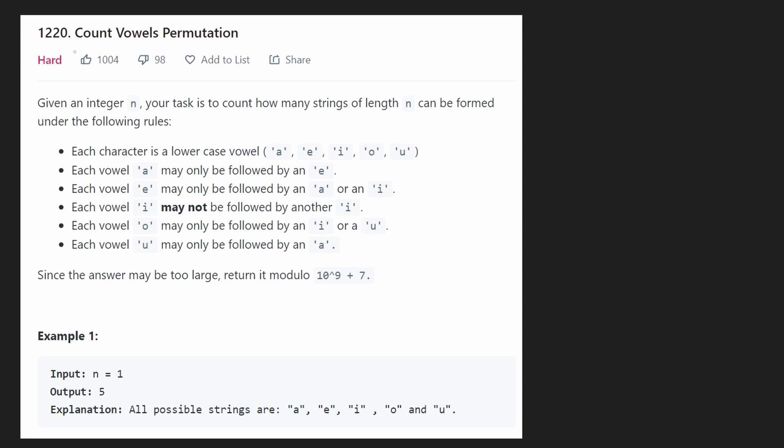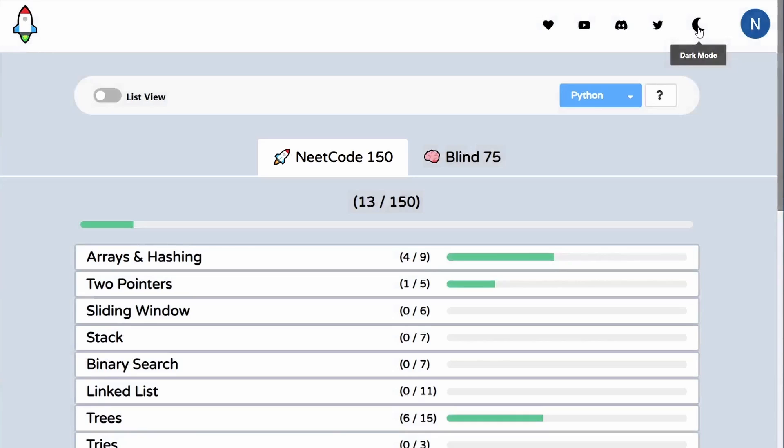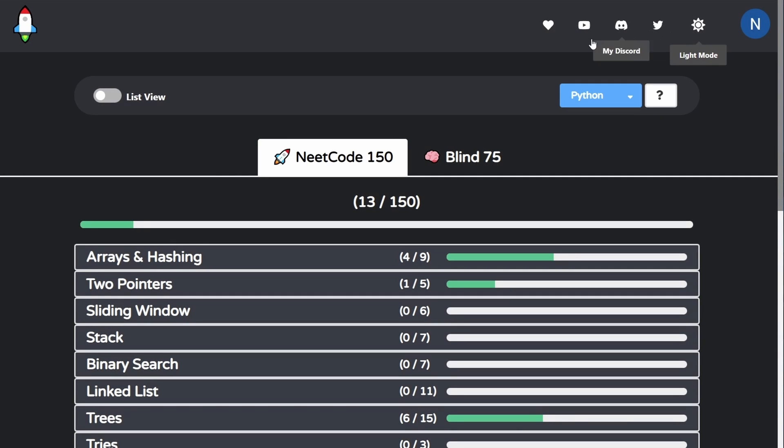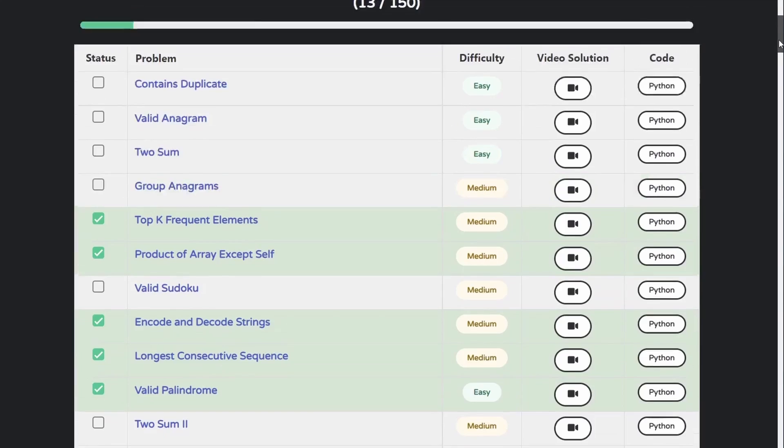Hey everyone, welcome back and let's write some more neat code today. It's been a while, so hopefully we're not rusty. Let's solve count vowels permutation. By the way, if you're not aware, I've added a bunch of cool updates to neatcode.io and I'm continuously updating it, so check it out if you haven't and please feel free to leave me any feedback or improvements that you'd like.